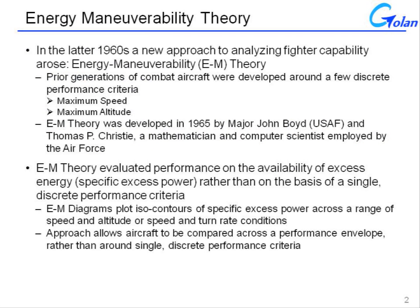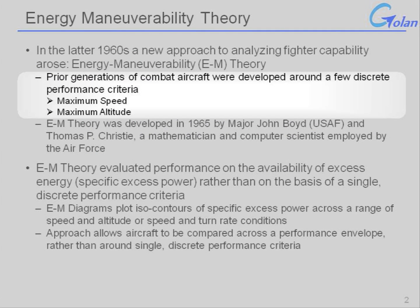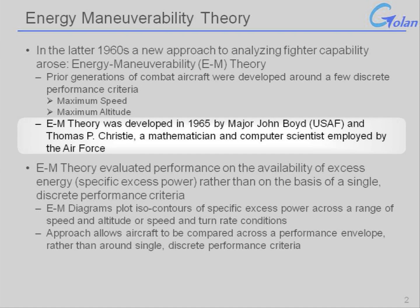Energy maneuverability arose in the latter 1960s as a new approach to analyzing fighter capability. Prior generations of fighter aircraft had been developed around a few discrete performance criteria — maximum speed, maximum altitude, time to altitude — but without a broader means of assessing how solid or robust a particular design happened to be. EM theory was developed in 1965 by then-Major John Boyd of the U.S. Air Force and Thomas Christie, a mathematician and computer scientist.